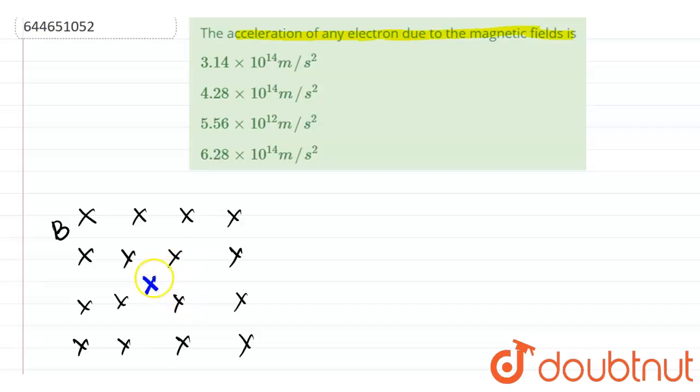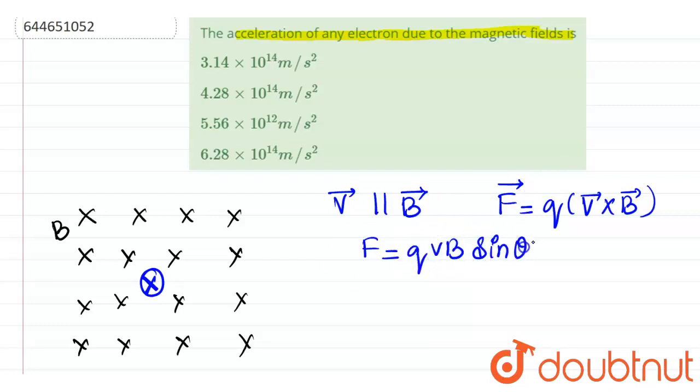That is, this is the velocity direction. If velocity of the electron is parallel to the magnetic field direction, we know that force experienced by a charged particle in a magnetic field is given by Q into V cross B. So if two vectors are parallel to each other, V cross B will be equal to 0. That is, magnitude of force will be equal to Q V B sin theta. So sin theta will be sin 0. So F will be equal to 0.